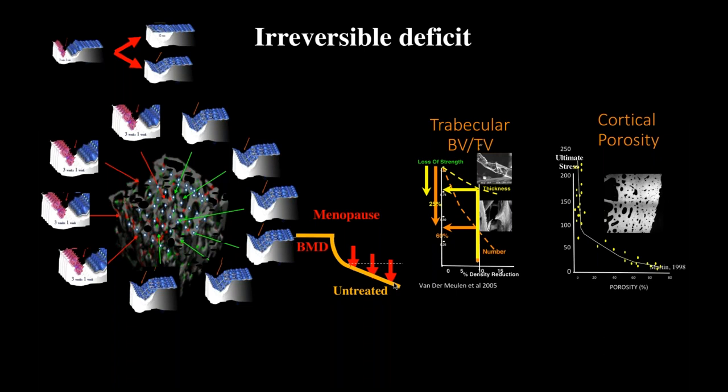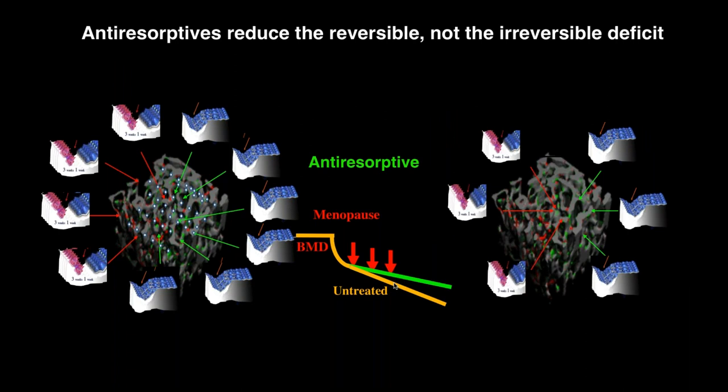So if we now give an anti-resorptive drug — what is the effect? The main effect is to slow the rate of bone remodeling. The anti-resorptive drugs do not correct the negative balance, so the residual remodeling that is not suppressed continues to decay the bone despite compliance with therapy. That is one of the limitations of the anti-resorptive drugs.